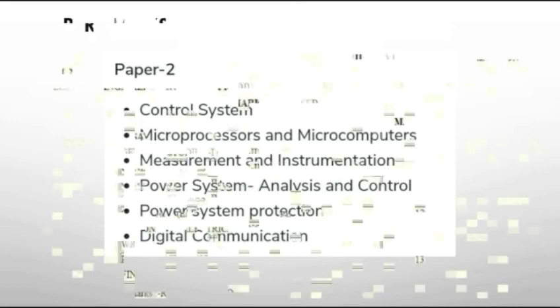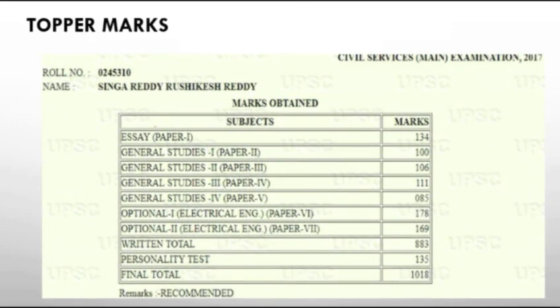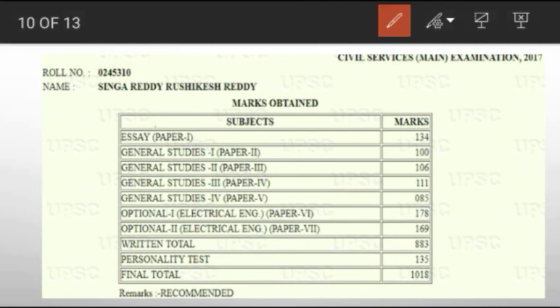I will show you the mark list of 2017 UPSC topper Singha Reddy, Rushikesh Reddy. You can observe from his marks that in the optional subjects, he scored the highest marks. Among all other subjects, he got the highest marks in the optional papers only. So, electrical engineering optional is a very good choice if you take it as an optional in UPSC.